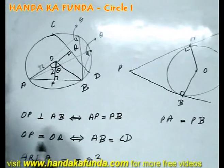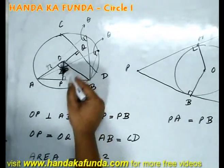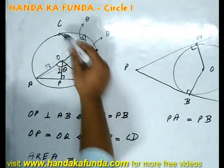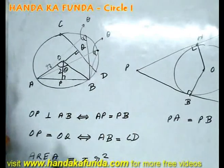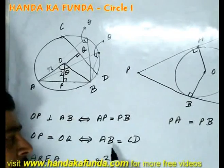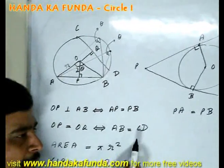If I am given that the distance of two chords is the same from the center, that is, OP is the distance to the chord AB and OQ is the distance to the chord CD, if I am given that they are equal, then the chords will be equal in length. If I am given that the chords are equal in length, then the distances will be equal. It is true both ways.